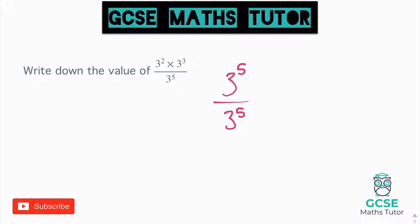If I think about what this is as a power of three — three to the power of five divided by three to the power of five — we subtract the powers. So that's five take away five, and five take away five is zero. So we get three to the power of zero.